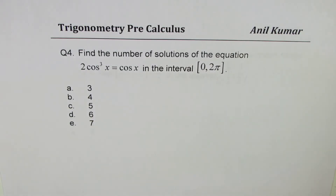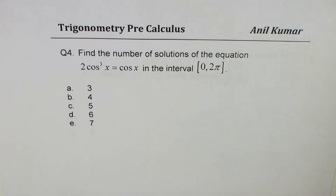Question number four: find the number of solutions of the equation 2 cos³x equals cos x in the interval 0 to 2π. To find the number of solutions, you actually have to find the solution itself — that's very important. Let's take up these questions one by one and understand the strategy.